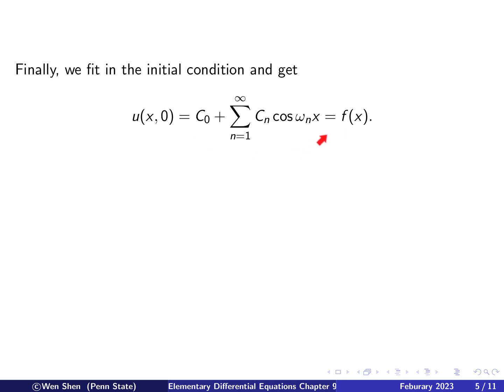So this we already know how to solve, how to find these coefficients in our discussion of the Fourier series and the half-range expansion. So c_n must be the Fourier cosine coefficient for the even half-range expansion of f.